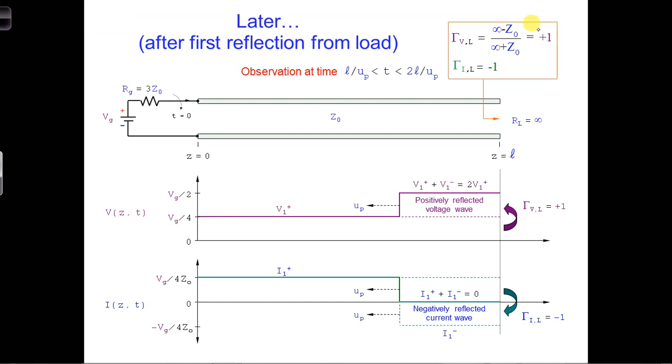Let's check your work. In this time period, the first V1 plus wave has reflected from the load, but the reflected wave has not yet reached the generator, which occurs at 2L over UP.